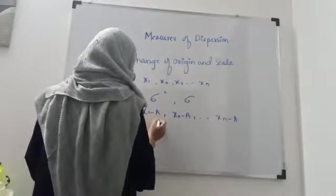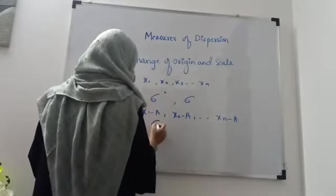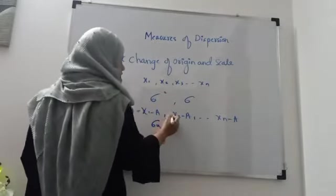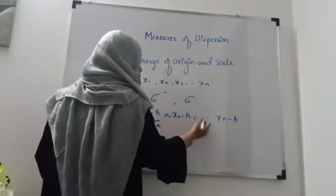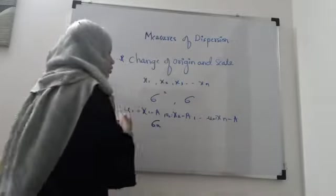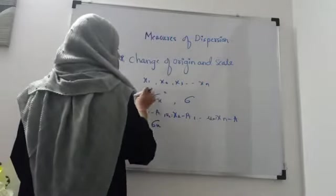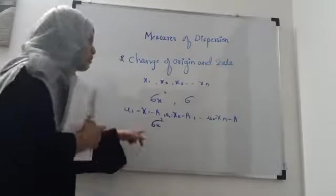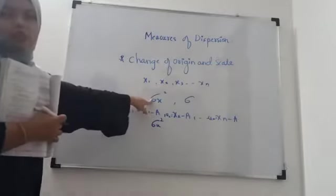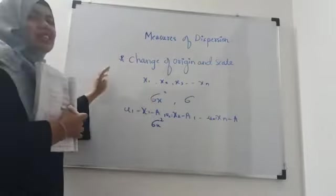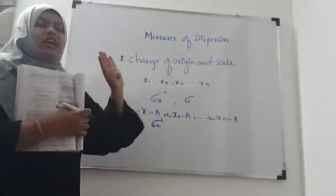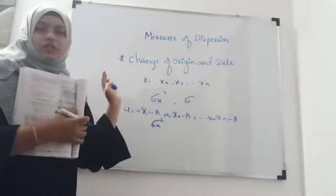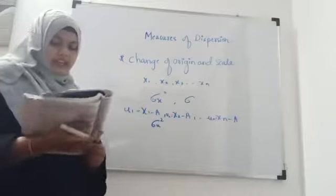So the new variables are called u₁, u₂, ..., uₙ. The variance of x and the variance of u will be the same. The variance and the standard deviation are independent if you change the origin of all x's.